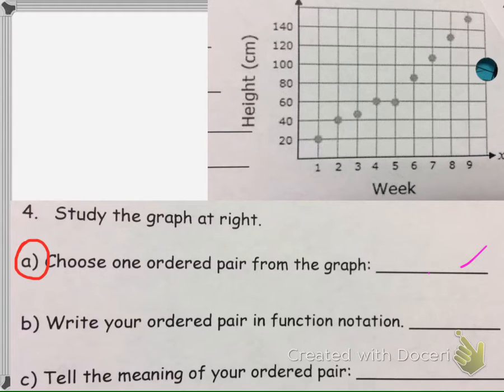Alright, so first thing we're going to do is, it says look at the graph and choose any ordered pair. So there is more than one correct answer for this problem. So I'm going to go ahead and pick this point right here.